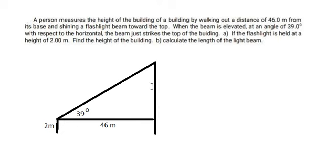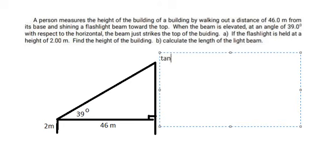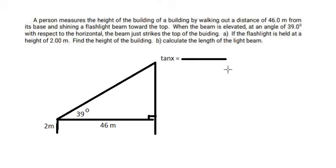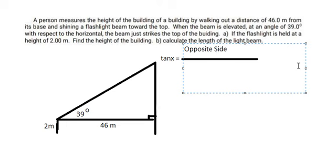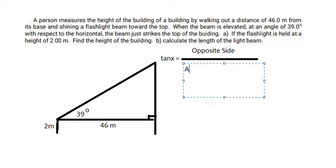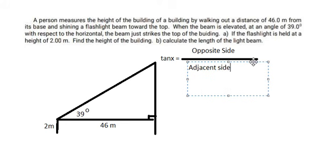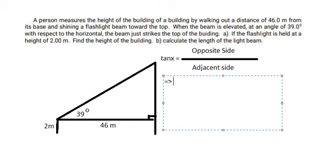After we draw the diagram, we can see that this is a right triangle. So we will apply the formula: tan x equals the opposite side over the adjacent side. Because we need to calculate the height of the building, we need to calculate the opposite side. So opposite side equals tan x multiplied by the adjacent side.